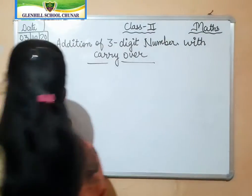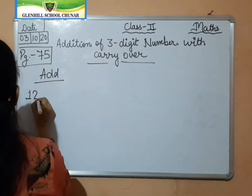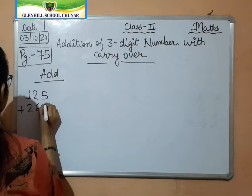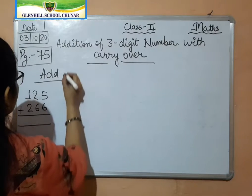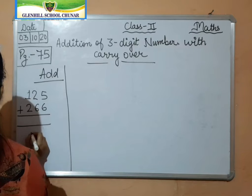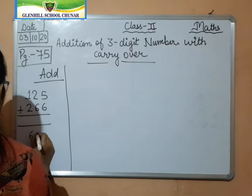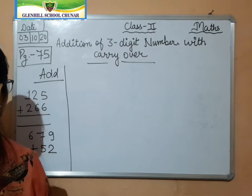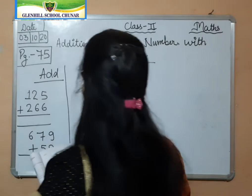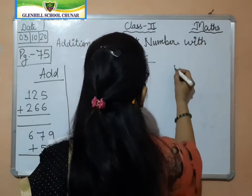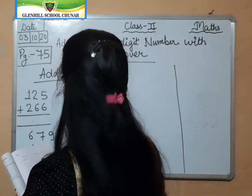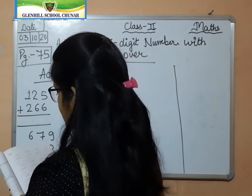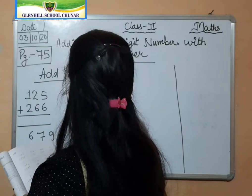Now I am writing some questions here on the whiteboard. First question: 212 plus 266. Second question: 679 plus 52. Third question: 586 plus 242.